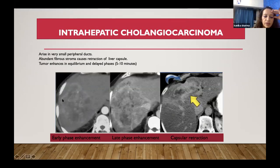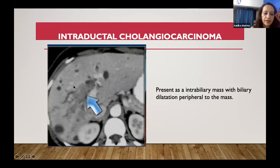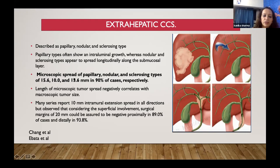Intrahepatic cholangiocarcinomas are not conspicuous in the early phase but show enhancement in the late arterial and equilibrium phases. Due to the fibrotic reaction, capsule retraction can sometimes be seen, which helps define the GTV. For extrahepatic cholangiocarcinoma, there is a lot of variation in CTVs because there are again different patterns: papillary, nodular, or sclerosing. Papillary ones form masses; nodular and sclerosing ones go submucosally along the biliary tract. Spread in papillary subtypes has been reported to be around 15–16 mm.